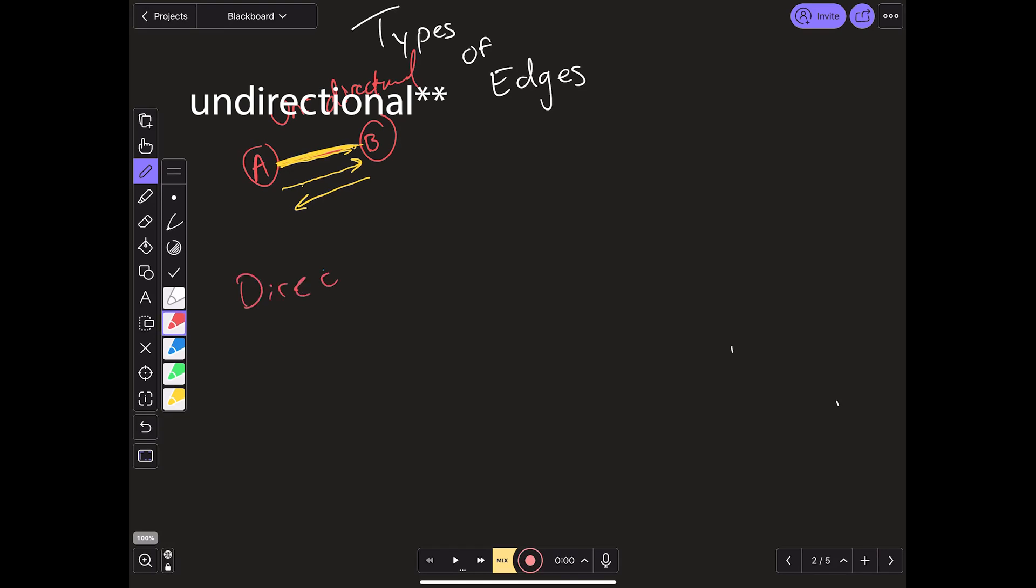However, on the flip side you can have a directional edge and this is what a directional edge looks like. It is simply the same thing except with an arrow at the end denoting which direction you are allowed to go in. In our case we can go from A to B but we cannot go the other way around from B back to A. That is what a directional graph is.